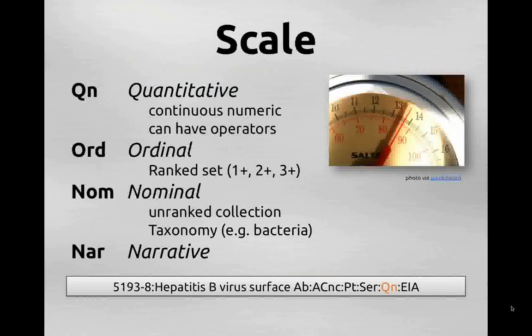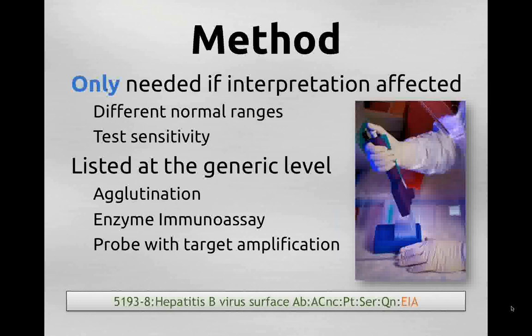The scale axis is where we distinguish among things reported as quantitative values, things that are ordinal (results that can be placed in a ranked order), things that are nominal (values drawn from an unranked collection such as a taxonomy of bacteria), and things that are narrative free-form text. The method is the only optional axis. We specify it when the clinical interpretation of the result is affected — for example, where there are vastly different normal ranges or test sensitivities. We only specify method at a relatively generic level — the level necessary to make the distinction, not at the detailed level of instrument and protocol.